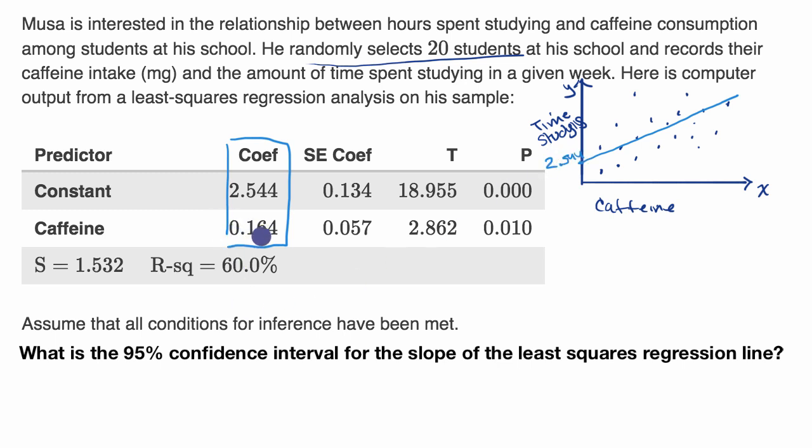And then the coefficient on the caffeine, this is one way of thinking about for every incremental increase in caffeine, how much does the time studying increase? Or you might recognize this as the slope of the least squares regression line. So this is the slope, and this would be equal to 0.164.